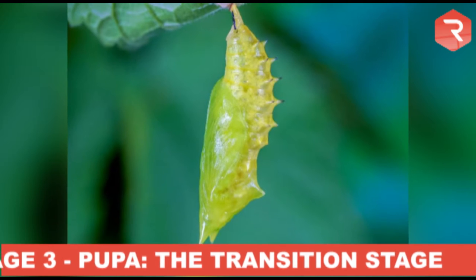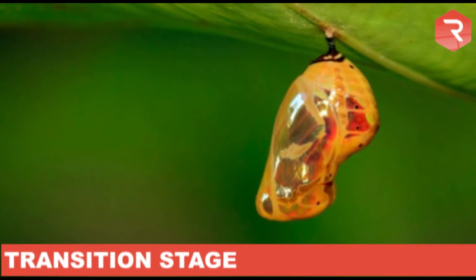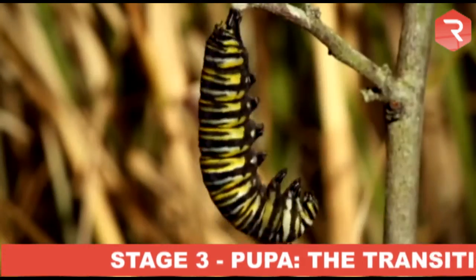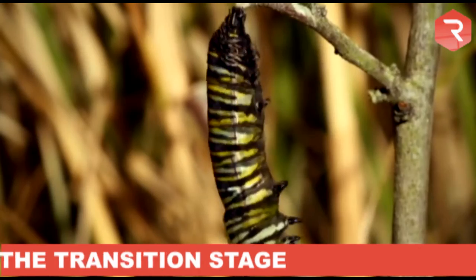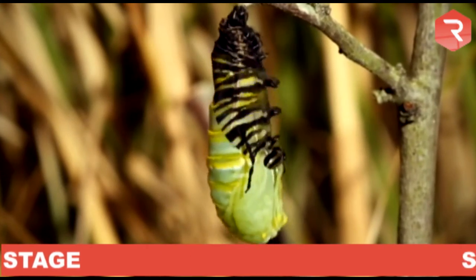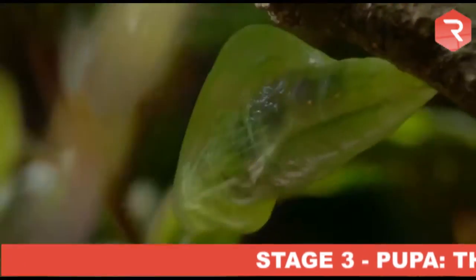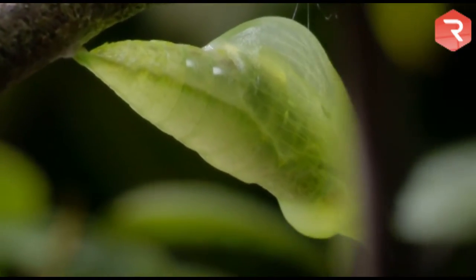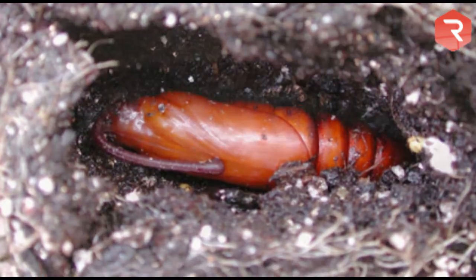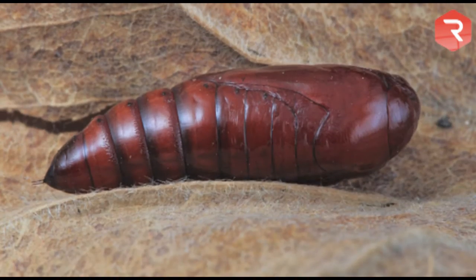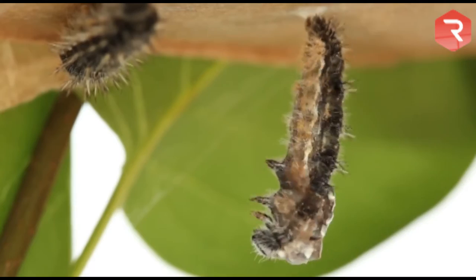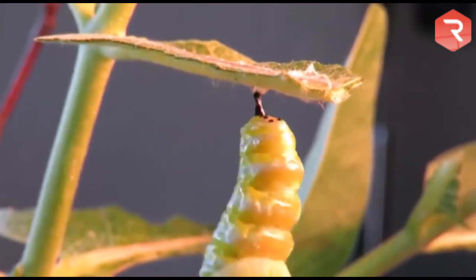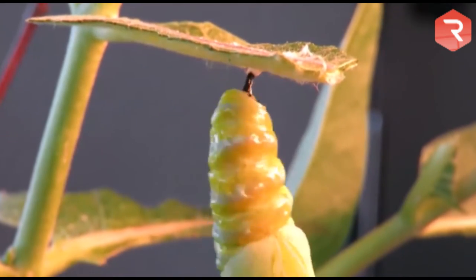Stage three — pupa: the transition stage. When the caterpillar is fully grown and stops eating, it becomes a pupa. The pupa of butterflies is also called a chrysalis. Depending on the species, the pupa may be suspended under a branch, hidden in leaves, or buried underground. The pupa of moths is protected inside a cocoon of silk. This stage can last from a few weeks to a month or even longer.